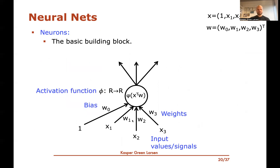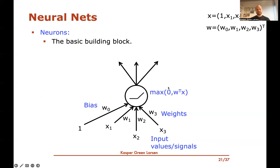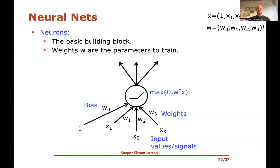Going back to the basic neuron, we had the activation function phi being applied to the signal in each of the neurons. For instance, if we choose to use the ReLU activation function, what we evaluate in this neuron is the maximum of zero and the signal, which is the inner product between W and X. When training this as a machine learning model, the things we change during training are these weights — W0 up to W3, the weights on the edges. These are what we modify in order to make good predictions using the neural net.